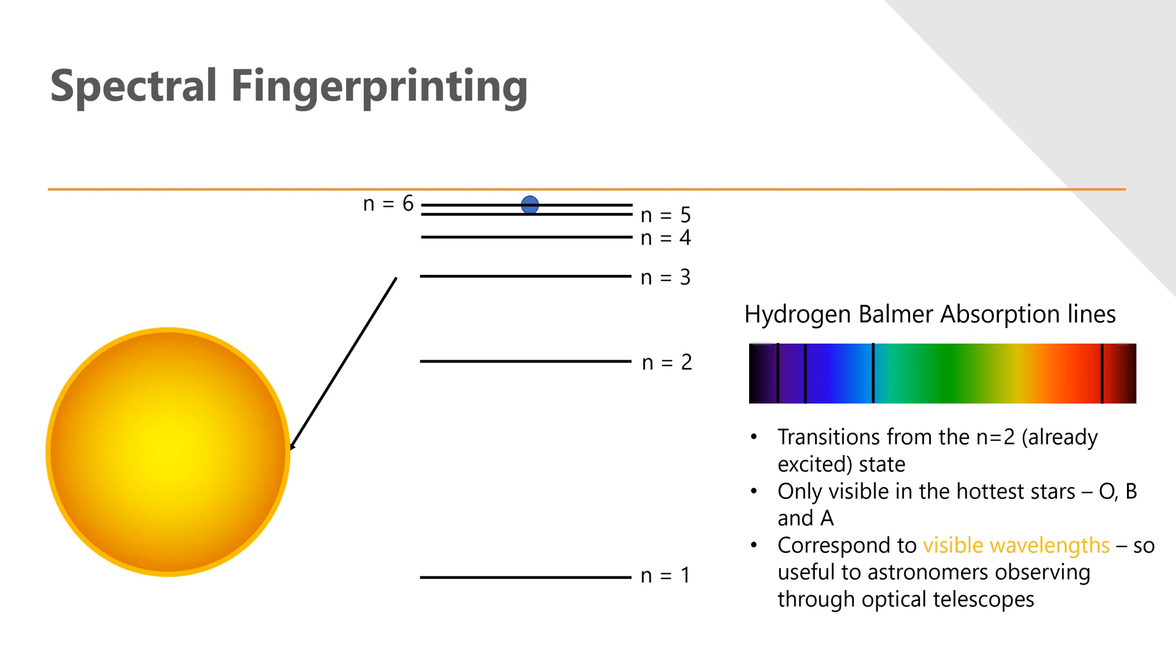The reason this is really useful from an astronomy standpoint is that they correspond to visible wavelengths, so we can see these absorption lines when using a visible telescope, an optical telescope. You are expected to be able to describe this process, you're expected to be able to explain what hydrogen Balmer absorption lines are and to link them to the hottest three classes of stars.